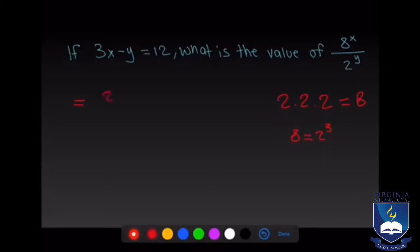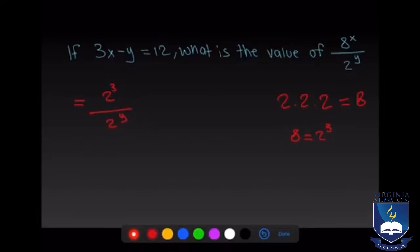So we write 2 to the power of 3 in the numerator over 2 to the power of y in the denominator. Because there is an x in the exponent, this becomes 2 to the power of 3x over 2 to the power of y.